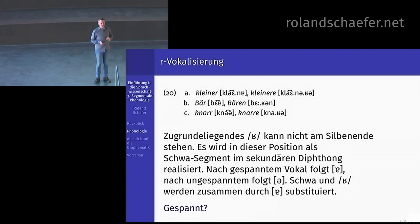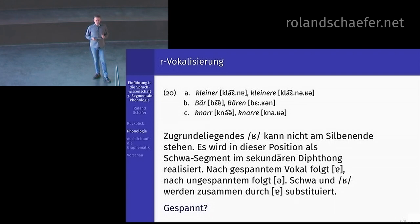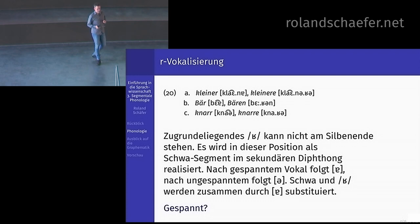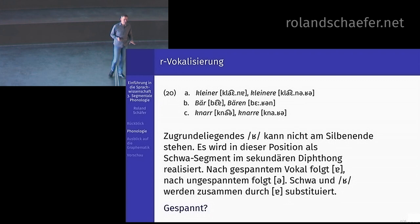Nach dem Übersprungenen kommt das Wort »gespannt« vor. Nach gespanntem Vokal folgt A [ach-Laut], nach ungespanntem folgt Ö [ich-Laut]. Den Unterschied zwischen A und Ö zu hören ist möglich. Was heißt jetzt gespannt und ungespannt? Das ist das Letzte, was ich Ihnen heute noch verkaufen möchte — gespannte und ungespannte Vokale spielen immer wieder eine Rolle, auch in der Graphematik nächste Woche.